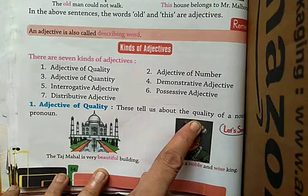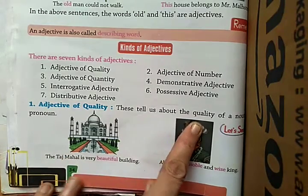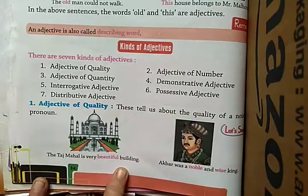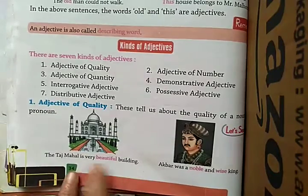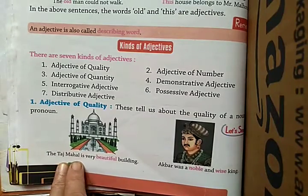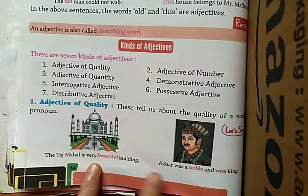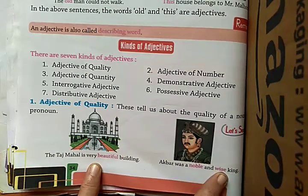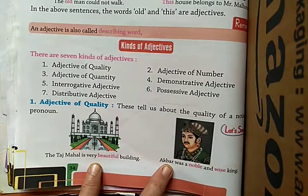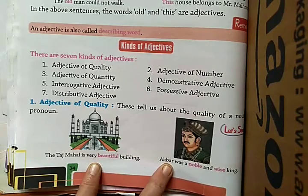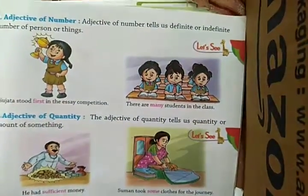Jaise 'Taj Mahal is a very beautiful building.' Ab Taj Mahal ek noun hai, toh uski quality kya bata raha hai? 'Beautiful.' 'Akbar was a noble and wise king.' Ab 'noble' aur 'wise' kya hain? Akbar ke liye use ho raha hai — Akbar hai noun. Toh yahan kya hoga? Adjective of quality hoga.